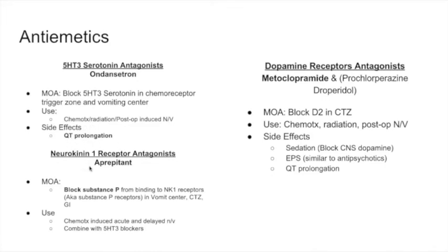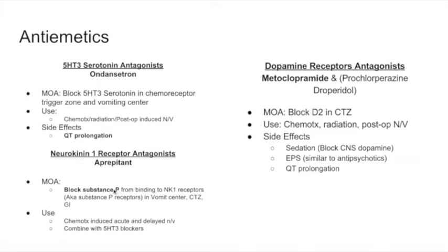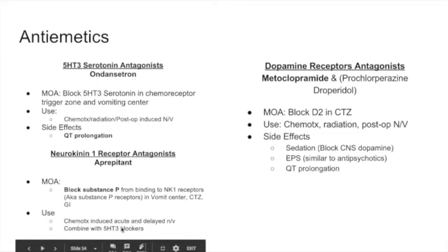The next antiemetic is a neurokinin receptor antagonist called aprepitant. There is a substance called substance P, which binds to the neurokinin receptor in the vomiting center, the chemoreceptor trigger zone, and the GI tract to cause nausea. Aprepitant blocks substance P from binding to the neurokinin receptor, reducing nausea and vomiting. It is used for chemotherapy-induced acute and delayed nausea and vomiting, usually combined with serotonin blockers. It is not super high-yield, but worth knowing.